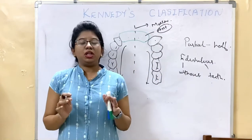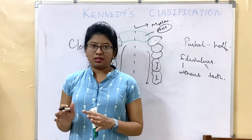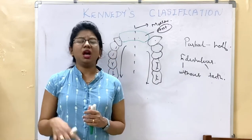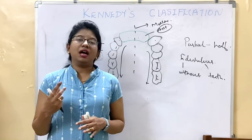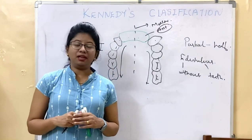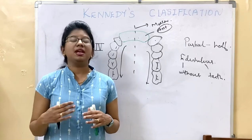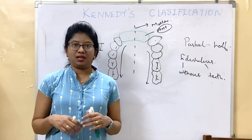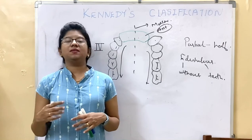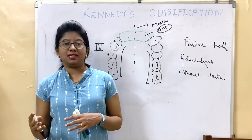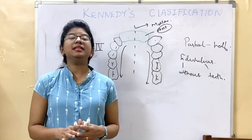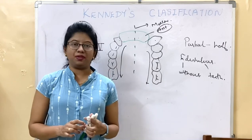You need to remember all four classes given by Kennedy. Later on, Applegate found certain modifications in the arches. He modified Class 3 into Class 5 as well as Class 6, adding two more classes to the classification. We will see Applegate's modification now.